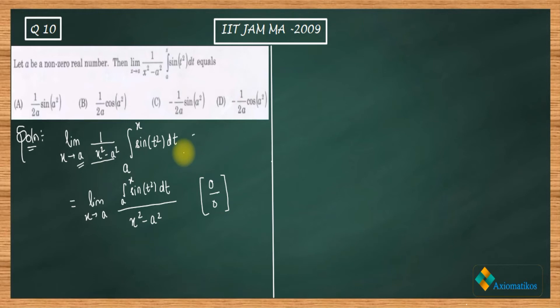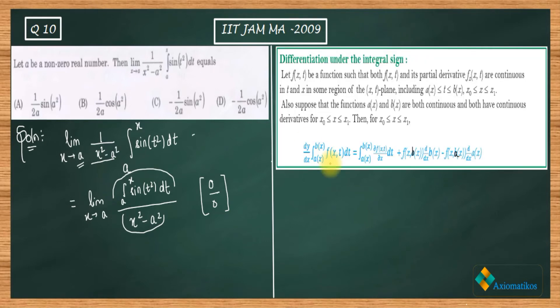To apply L'Hospital rule, what we have to do is differentiate this thing separately - we have numerator, we have denominator, we have to differentiate them separately. Now on the numerator part we have integral, so if you have studied Leibniz rule, then Leibniz rule will tell you how to differentiate under the integral sign. Otherwise you will not be able to use L'Hospital rule here.